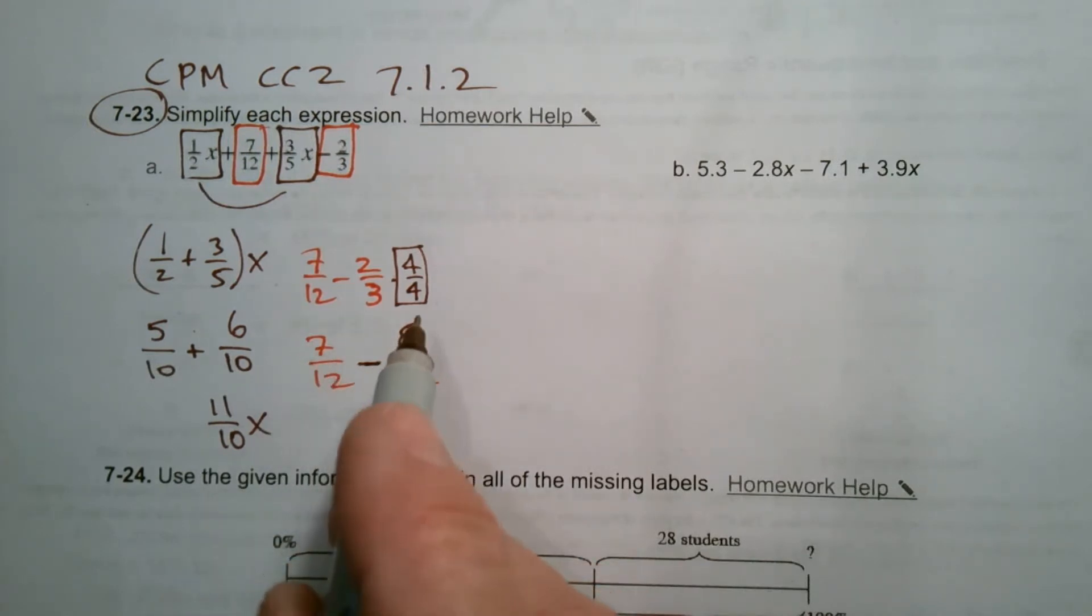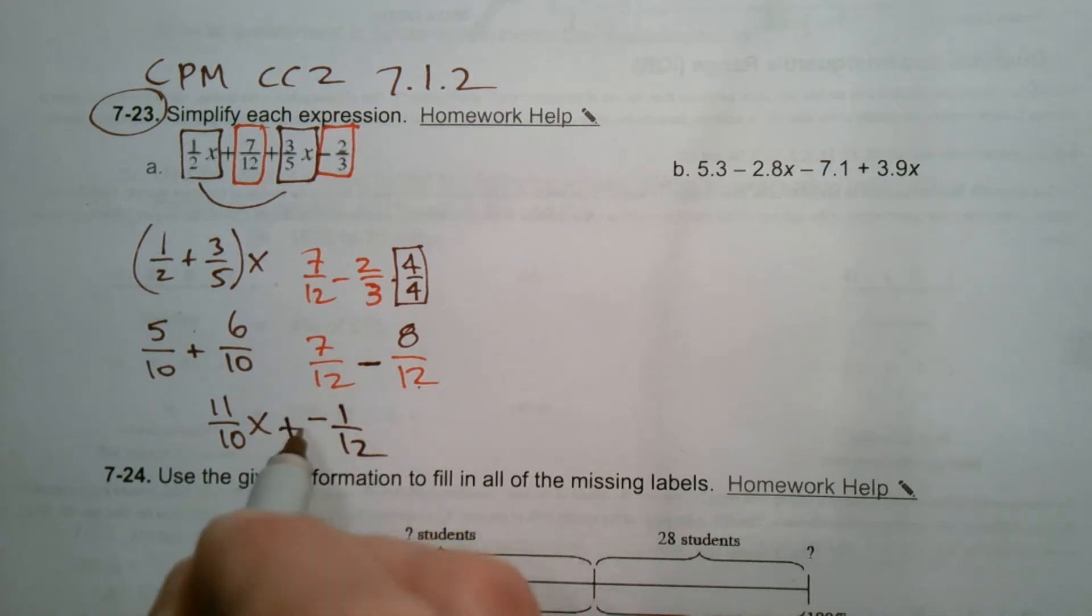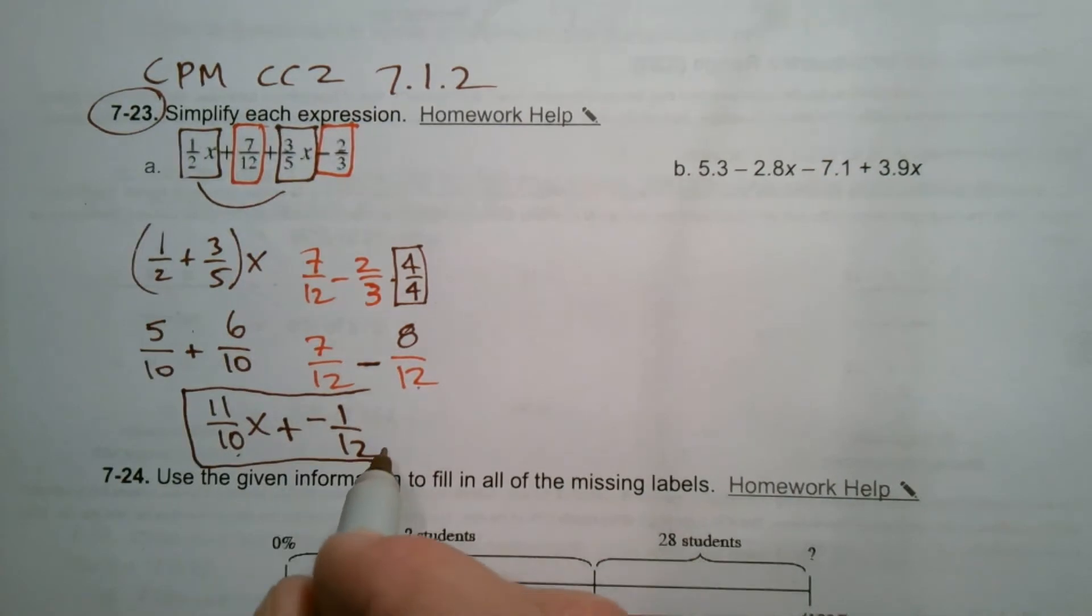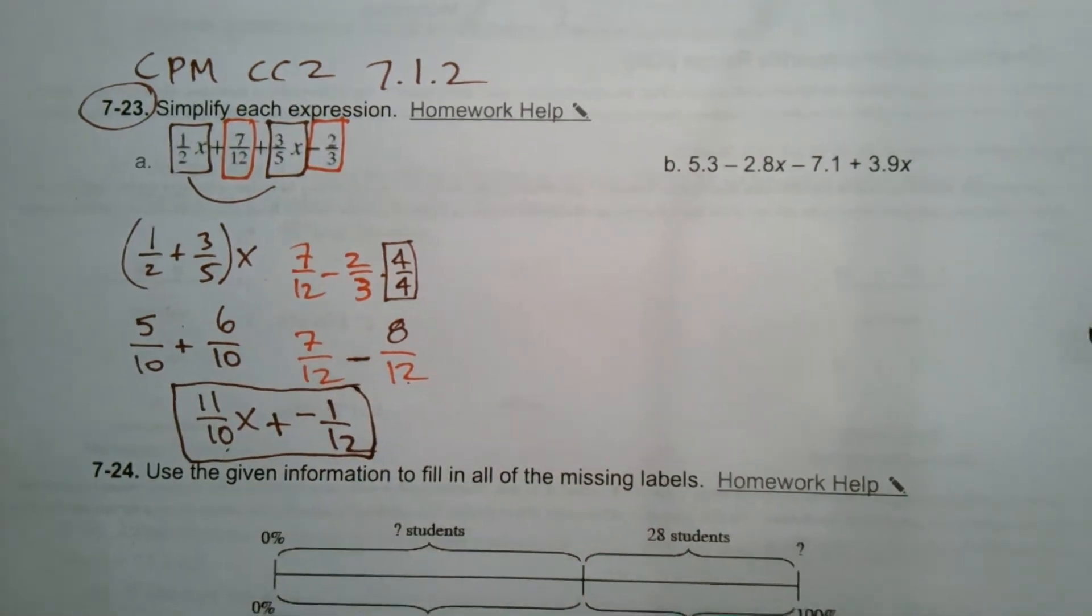Well, 7 minus 8 is negative 1 twelfth. So this is my new expression, 11 tenths x plus negative 1 twelfth. Or we could change that just to be a minus, and that would be also correct. There we go. There's that one.